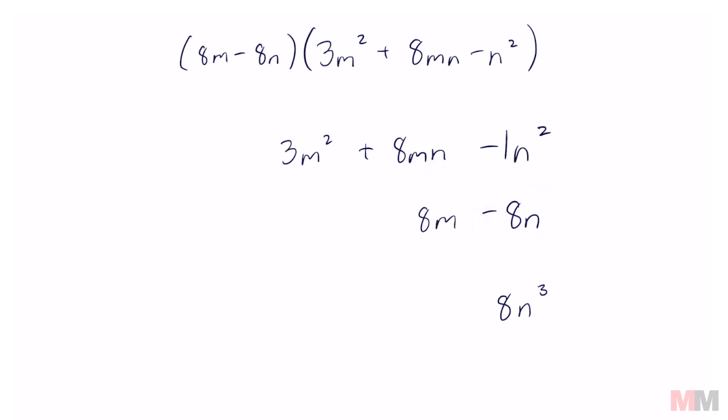And you're just going to repeat that pattern for each one of these. Negative 8n times 8mn is negative 64mn squared. Don't forget that this one was positive. And negative 8n times 3m squared is going to be negative 24m squared n. And just like regular multiplication, now we move on to this term. 8m times negative 1n squared is going to be negative 8mn squared, and it's going to be like terms with this one which is kind of nice. 8m times 8mn is a positive 64m squared n, like terms so it's nice. And 8m times 3m squared is a positive 24m to the third power.